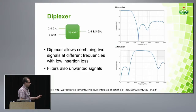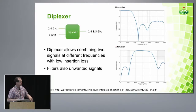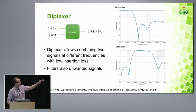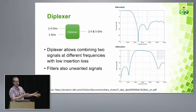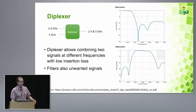The diplexer has three ports: one feeding both frequencies, then separating them to two different branches. The 2.4 GHz path has low loss up to 2.5 GHz, while the other branch has low loss at 5 GHz but high loss at lower frequencies, allowing both signals to be combined and fed to one antenna port.